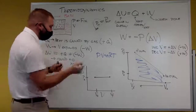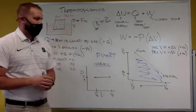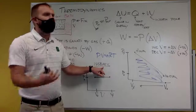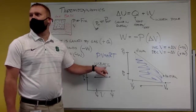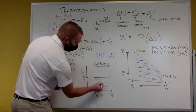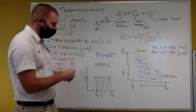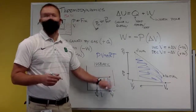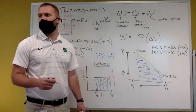This is called isobaric — 'bar' is a way to measure pressure, so isobaric means pressure is constant. Notice now there is work done — that's the area under the curve. In the isochoric case, with the vertical line graph, there was no area underneath the curve and therefore no work done.